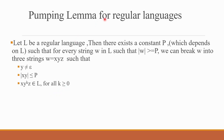If L is a regular language, we can find a constant p called the pumping length, which depends on L. For every string w in L whose length is greater than or equal to p, we can break that string into three parts. The conditions are: first, y is not equal to epsilon — the y part is not null; second, |xy| is less than or equal to p.